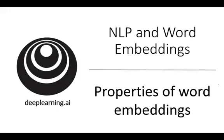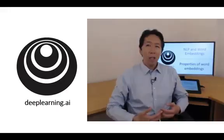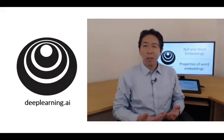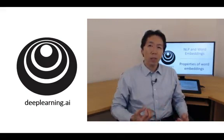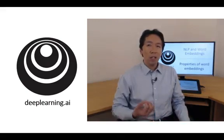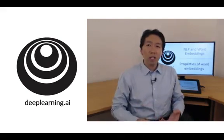By now, you should have a sense of how word embeddings can help you build NLP applications. One of the most fascinating properties of word embeddings is that they can also help with analogy reasoning. And while reasoning about analogies may not be by itself the most important NLP application, they might also help convey a sense of what these word embeddings are doing, what these word embeddings can do.